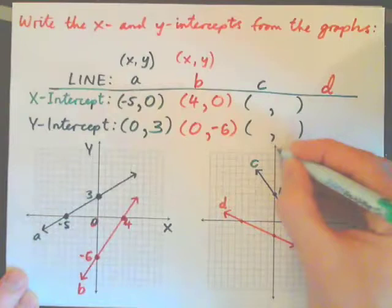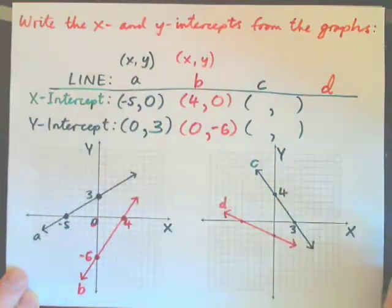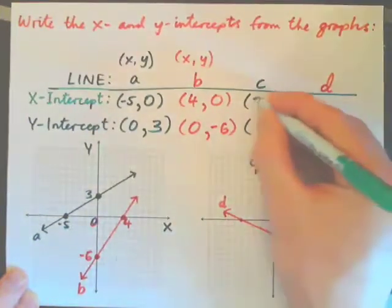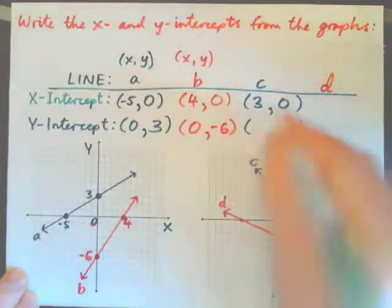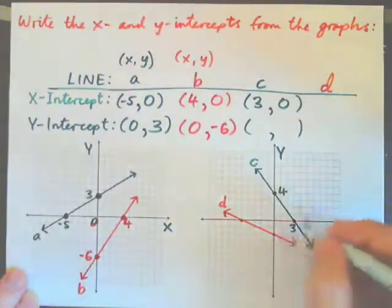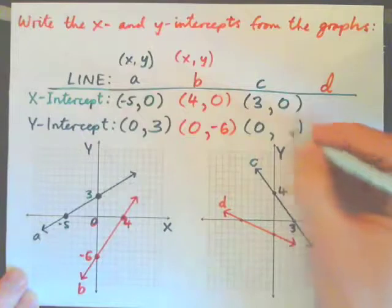This is the x-axis. That's the y. So again, this is when x is 3, y is 0. That's the x-intercept. The y-intercept is when x is 0 and y is 4.